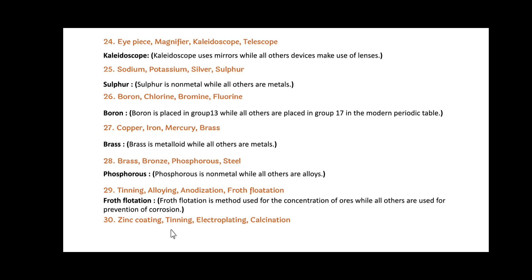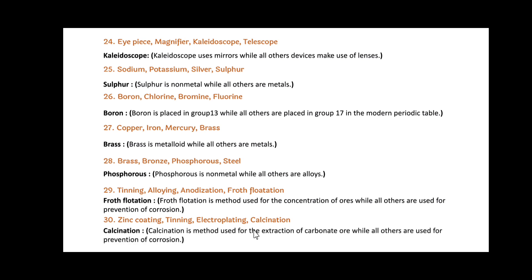Next: Zinc Coating, Tinning, Electroplating and Calcination. Here, Calcination is the odd one out. Since Calcination is a method used for the extraction of carbonate ore, while all others — Zinc Coating, Tinning and Electroplating — are used for the prevention of corrosion.